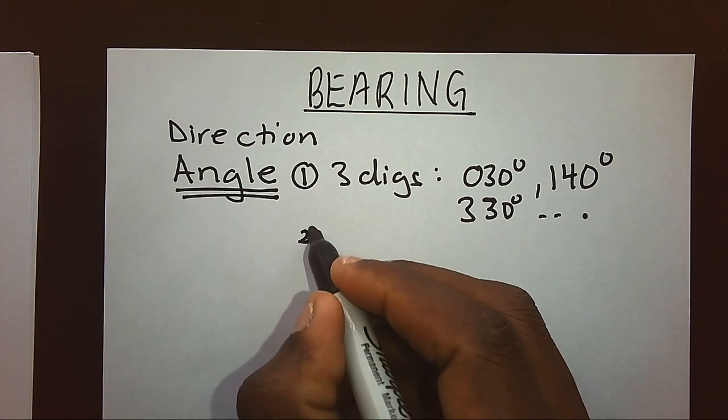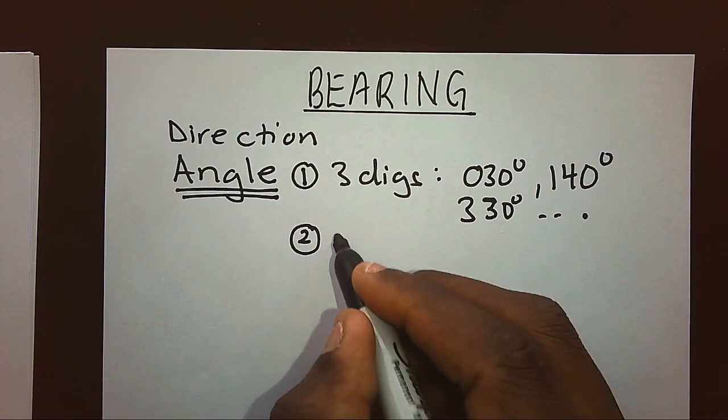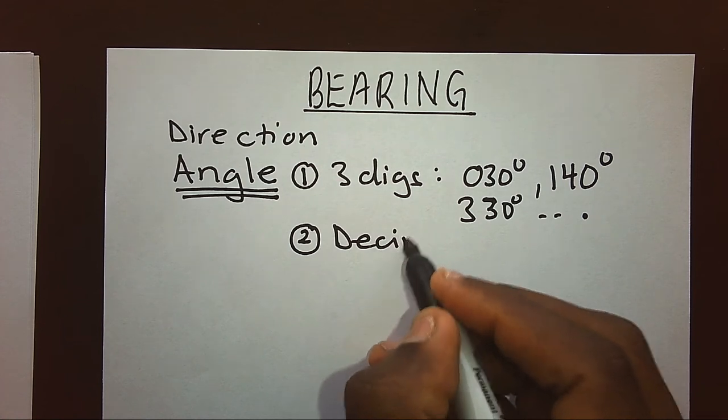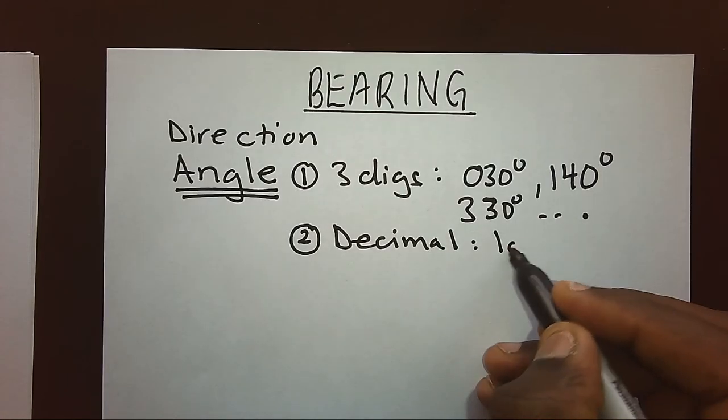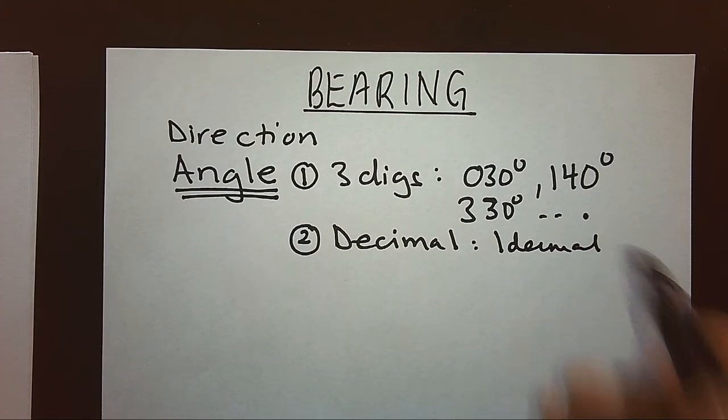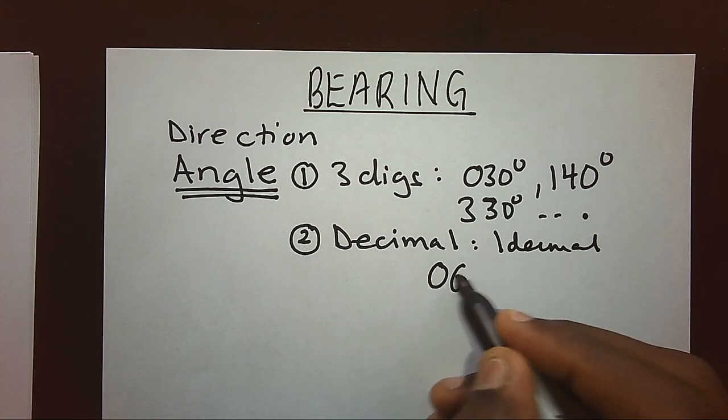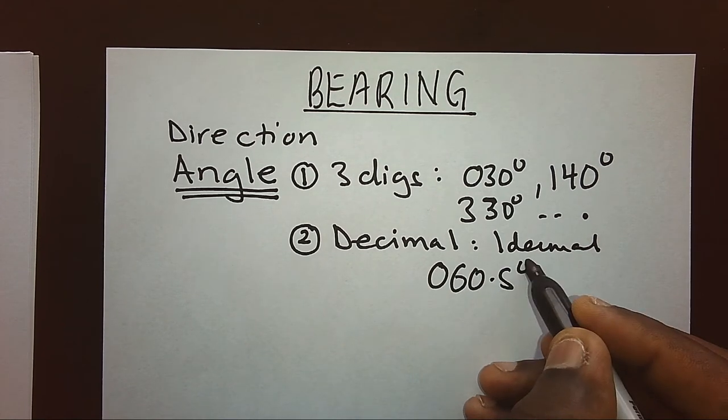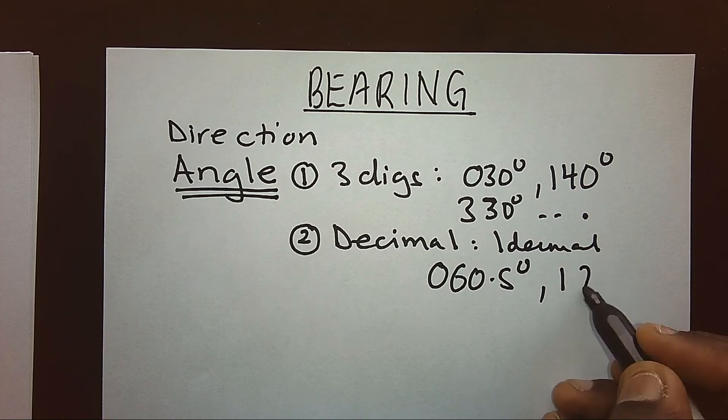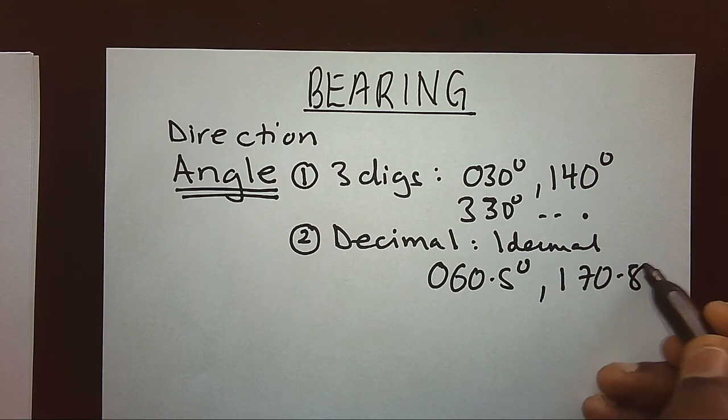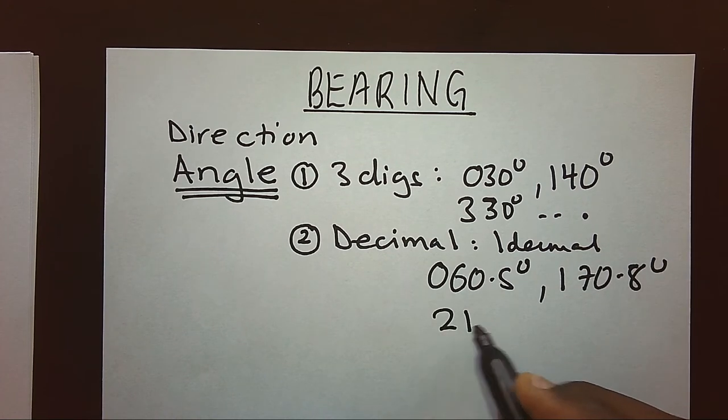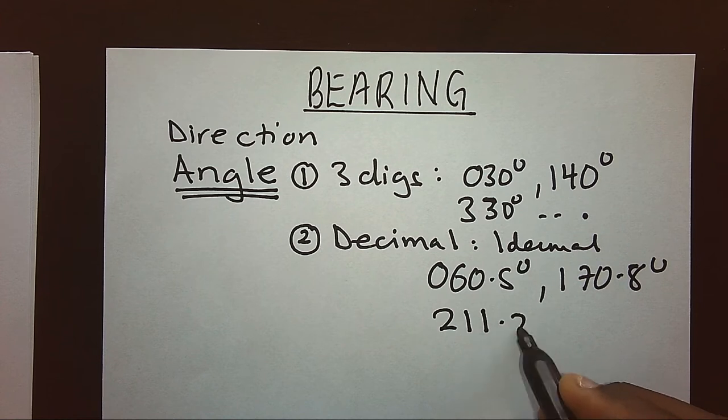However, this angle, in case there are decimals, we have to keep only one decimal. For example, 060.5°, 170.8°, 211.2°.